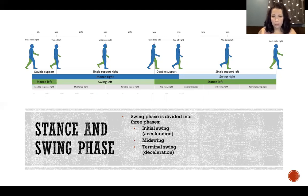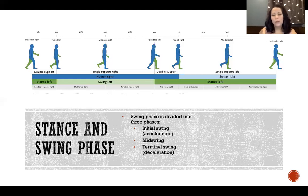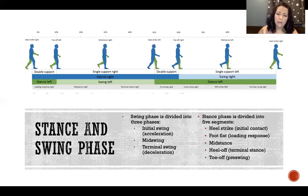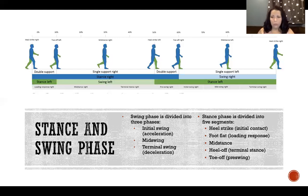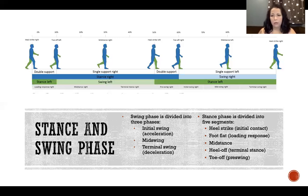Swing phase is divided into three distinct sub-phases: initial swing, also called acceleration, where the leg is getting started and accelerating through swing; mid swing in the middle; and terminal swing, also called deceleration, at the end where we're slowing the limb to land with control. Stance phase is divided into five segments: heel strike (also called initial contact), foot flat (also called loading response), mid stance, heel off (also called terminal stance), and toe off (also called pre-swing).